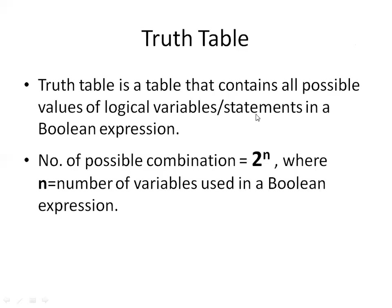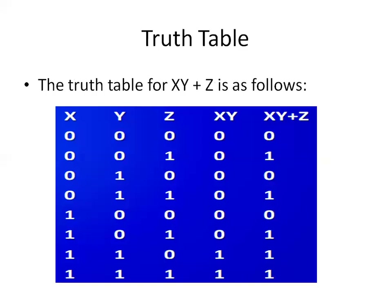For a truth table, the formula is 2 power n, where n is the number of real variables used in a Boolean expression. If there are two variables, the possible combinations will be four. If there are three variables, it will be 2 power 3, giving eight combinations. If there are four variables, 2 power 4 gives sixteen combinations. When we write all possible combinations in a table, that is called a truth table.